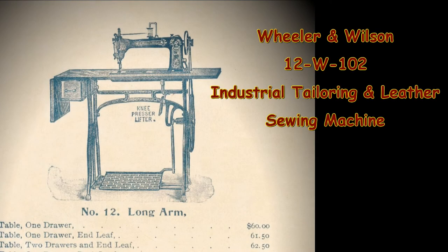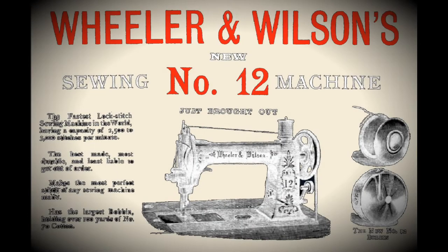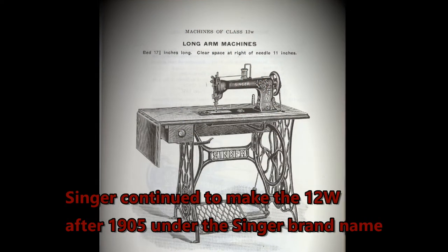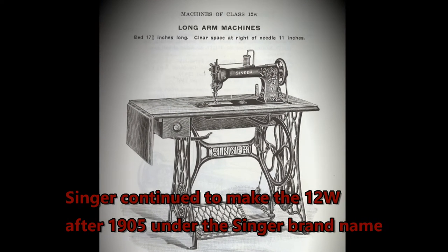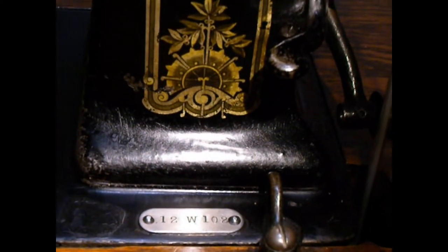Wheeler and Wilson introduced the Model 12 industrial machine in about 1888 and made a variety of these styles. In 1905, Singer bought out Wheeler and Wilson and continued to make some of their models, the 12 in particular, calling it the 12W with different model names.